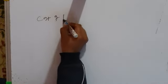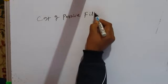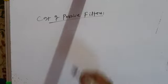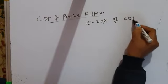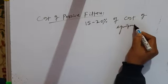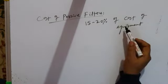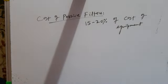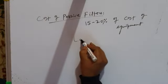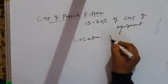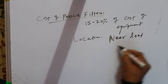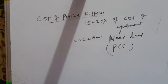The cost of passive filters is an important factor — it can go as high as 15 to 20% of the cost of the equipment, which sometimes becomes unaffordable. Regarding location, the filter should be connected near the load — at the point of common coupling — which is the best place for a shunt passive filter.